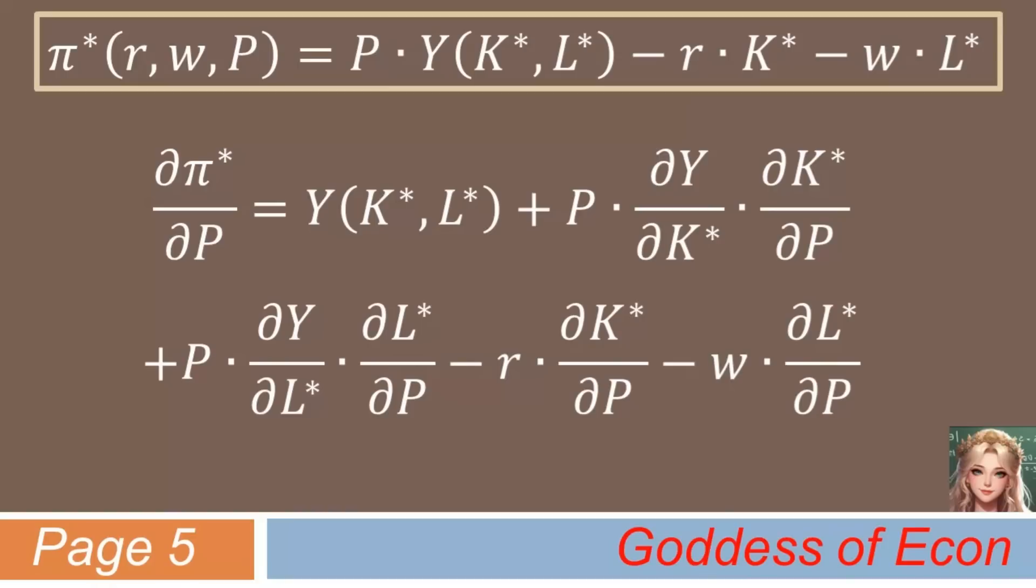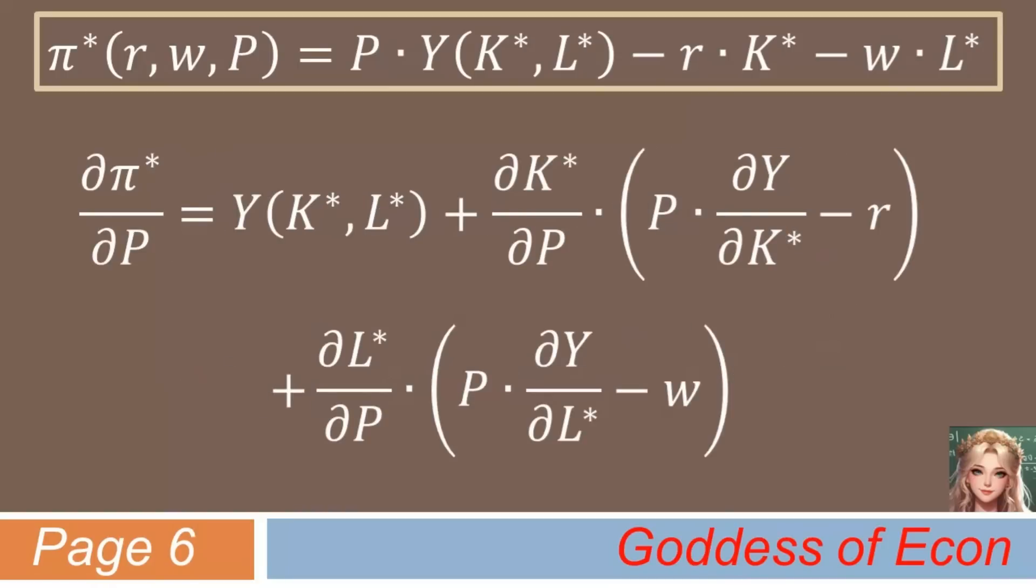Now, as before, let's factor out the partial derivatives of k and that of l. So, here, we have first order conditions once again in the parentheses. As they are equal to 0 at the optimum, we are left only with y as a function of k* and l* on the right-hand side of the equation.